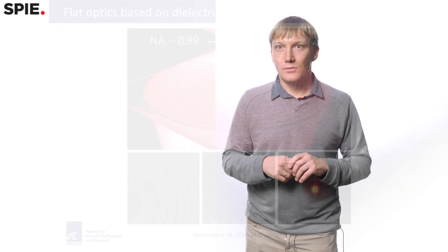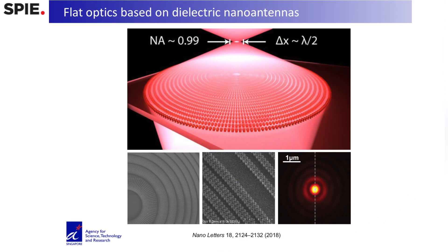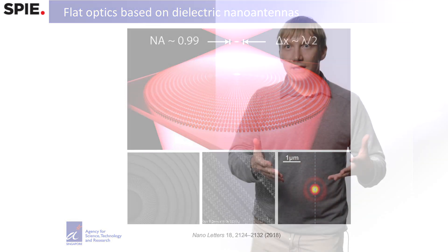One of the applications which is now discussed a lot and I think already the first companies are there is related to what is called flat optics or metasurfaces. So basically this is array of such antennas, each of those controlling light. And then you can shape the wavefront and focus light, or create some vortex beam. Basically create any functionality which you require, but with just a simple layer of such nano antennas.